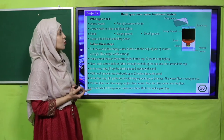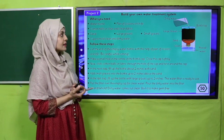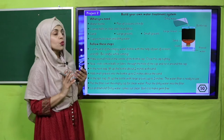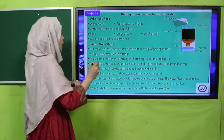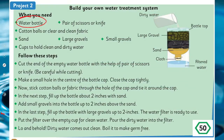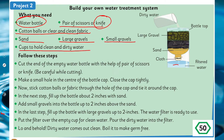Open page number 50 for Project Number Two: Build Your Own Water Treatment System. First, let's look at what you need — the materials. We need a disposable water bottle, a pair of scissors or a knife, then cotton balls or clean fabric, sand, large gravels, small gravels, and cups to hold clean and dirty water.